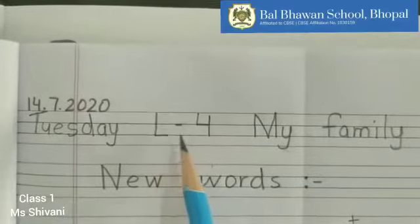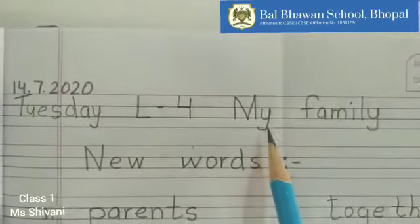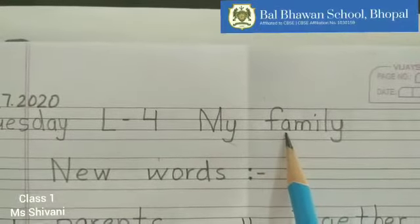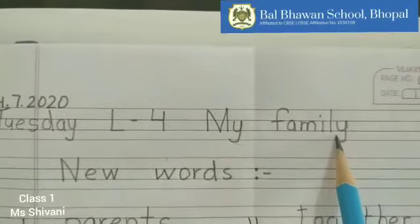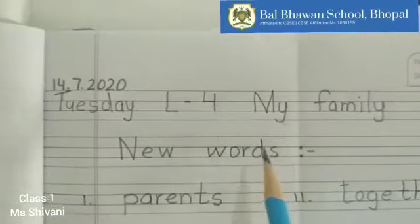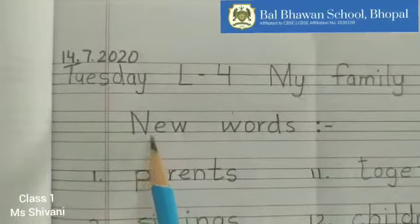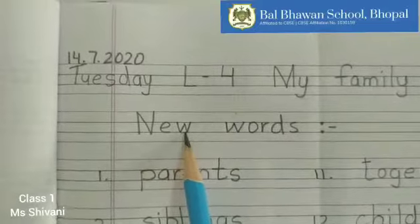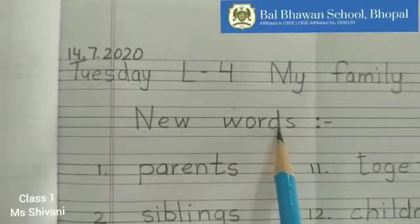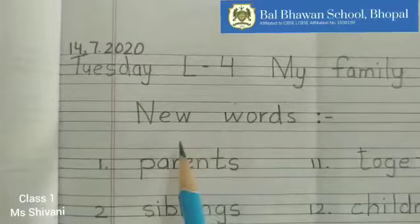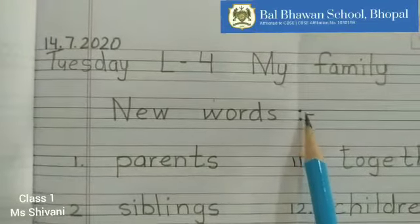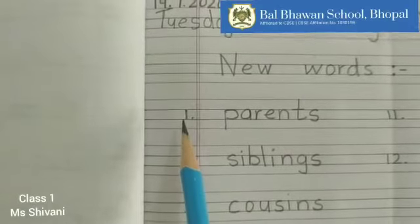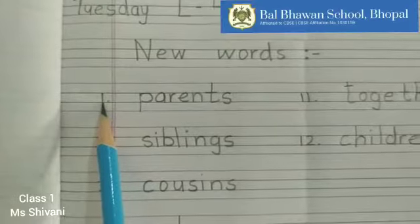Write Lesson Number 4 — My Family. F-A-M-I-L-Y, family. Now on the next line write New Words. N-E-W, new. W-O-R-D-S, words. New words. Then two dots and a small dash. Now write on the next line. Number 1.